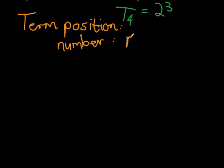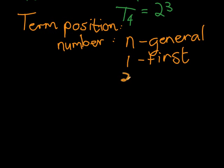We usually use N to represent the term number. When we have N, we're not specifying which term, so N is general. One would be the first, two would be the second, and so forth.